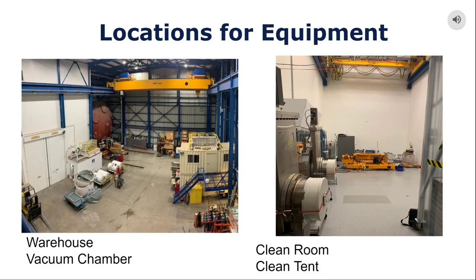The two biggest pieces of equipment requiring space in the observatory installation will be the clean tent and the vacuum chamber. The clean tent will be placed in the clean room after some space is cleared for it, and the vacuum chamber will be placed in the warehouse, where plenty of space is available.